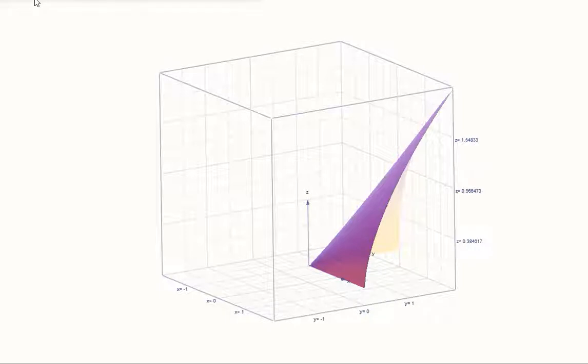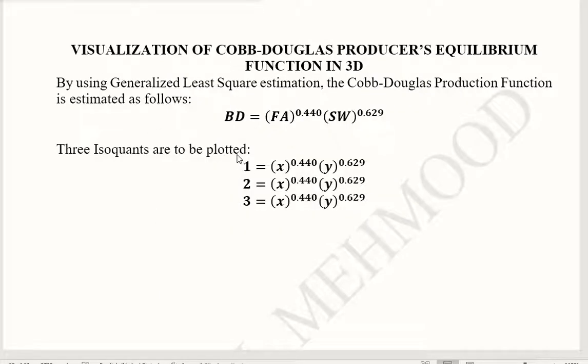Now we can come towards the indifference curves of the same production function. So you can see that these three iso-quants we have to plot. This is the first one, this is the second one, and this is the third one. We considered that on the first iso-quant, the output is 1 unit, and on the second one it is 2 unit and 3 unit. So in this way, we can extend this to any number of iso-quants. So it will become an iso-quant map.